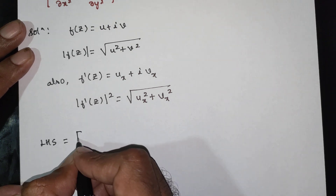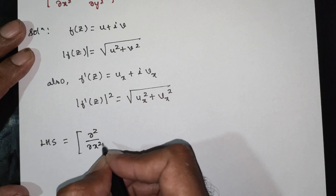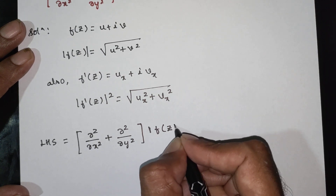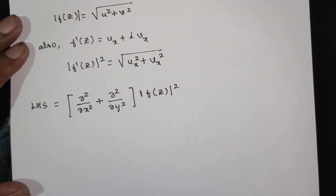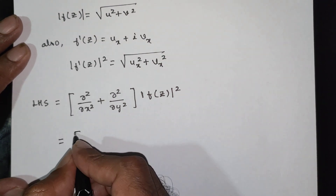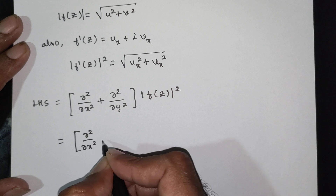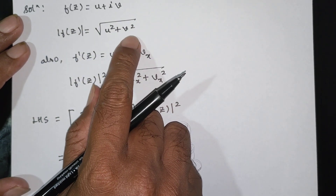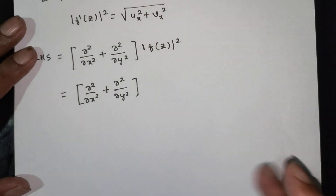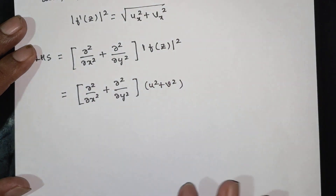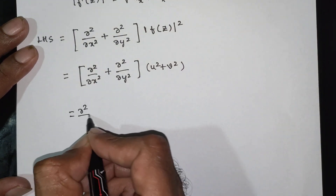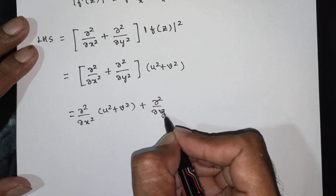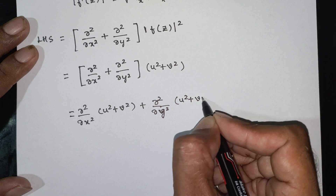The LHS is equal to (∂²/∂x² + ∂²/∂y²) applied to |f(z)|². Since |f(z)| = √(u² + v²), we have |f(z)|² = u² + v². So LHS = (∂²/∂x² + ∂²/∂y²)(u² + v²).